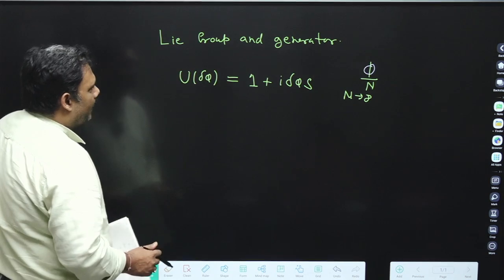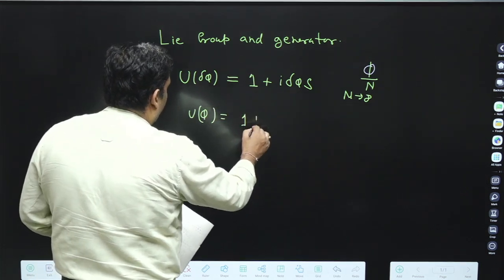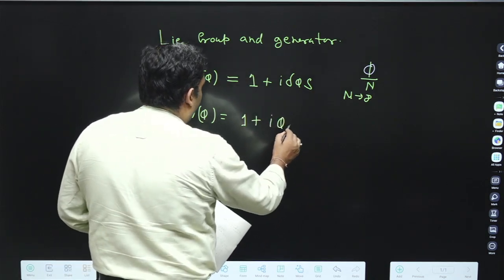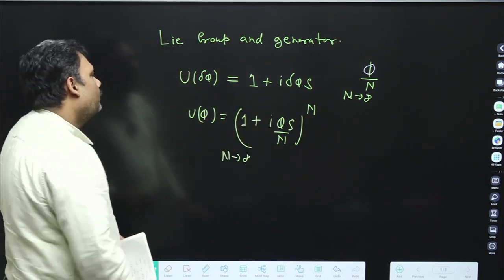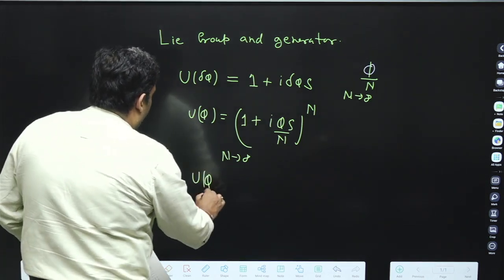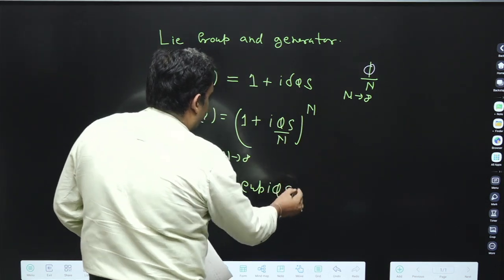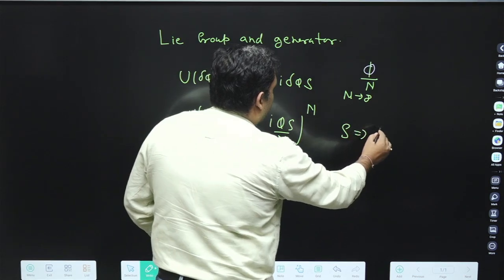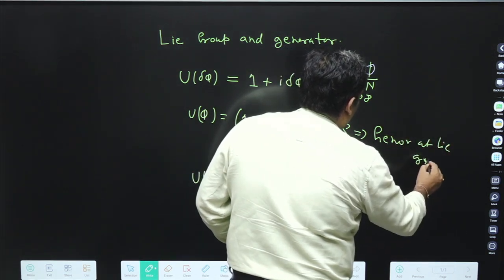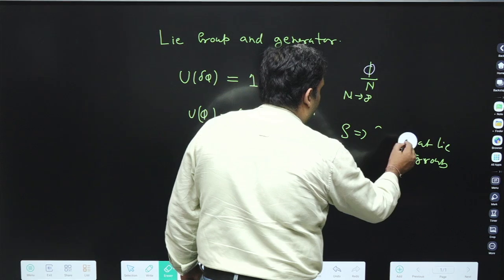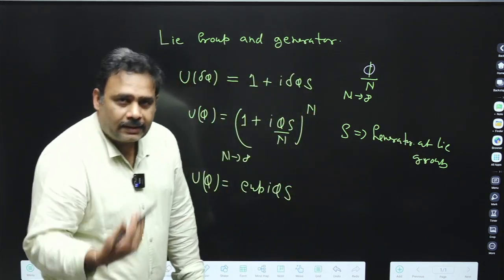Using calculus, you can write U(φ) = (1 + iφS/n)^n where n tends to infinity. From this, U(φ) = exp(iφS). S is identified as the generator of the Lie group. We are very much interested in the generator of the Lie group.